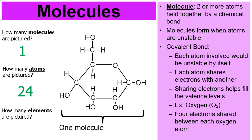There are six carbons, twelve hydrogens, and six oxygens. How many elements? Three — carbon is one element, oxygen is another, hydrogen is another. This is the one molecule called glucose. Its formula would be C6H12O6 — six carbons, twelve hydrogens, and six oxygens. But this is one molecule made from lots of individual atoms.